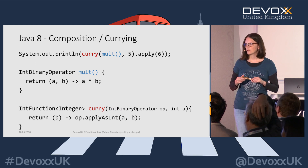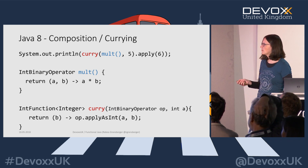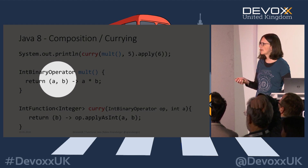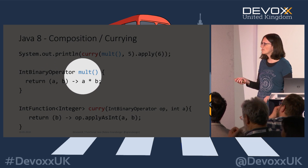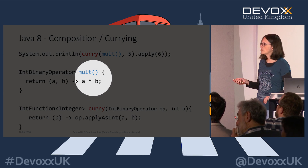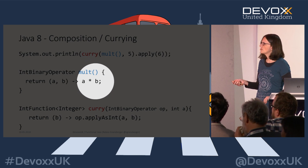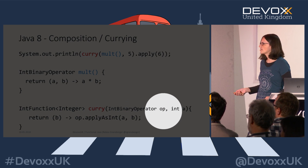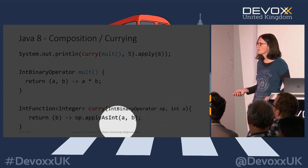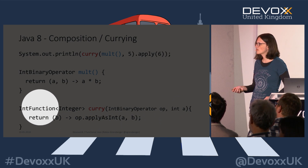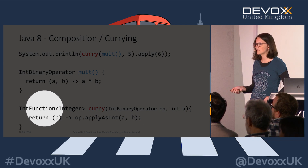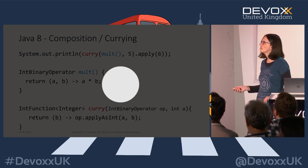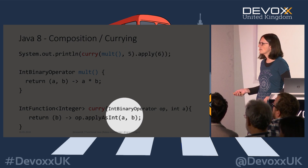Currying means we want to fix one of the values. We have a multiply operation returning a `BinaryOperator` which takes two input parameters `a` and `b`, computing `a * b`. If we always want to multiply by 5, we can make a new `currying` method that passes in the fixed value as parameter `a`, and returns back a new single-parameter function — not a `BiFunction` anymore. We fix the value `a = 5`, and still take `b` as the input.